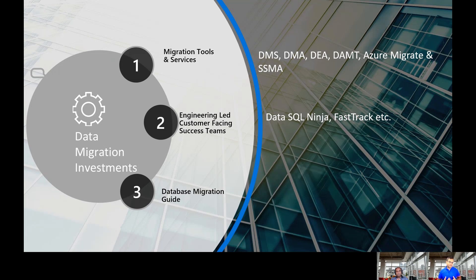That's why Microsoft is investing in engineering-led customer-facing success teams. Within the Data Group, we have customer success engineering. SQL has something called Data SQL Ninja. At the Azure level, many of you might have already worked with Azure Migrate Plan and teams like FastTrack. This is another layer of investment where we want to aid your process of complex modernizing and digital transformation — not just by giving you the product, but also product expertise along with it. It's a mutual success whether we are fast failing or fast succeeding together.